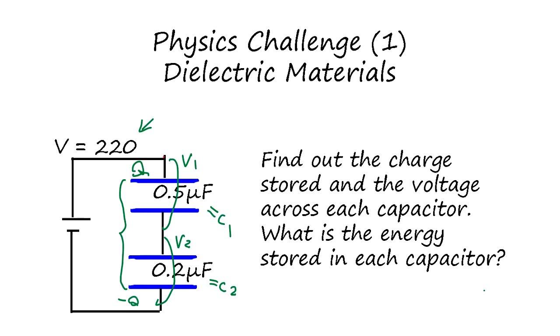So it's going to be Q over C1, that's voltage 1, plus Q over C2, that's voltage 2, is going to be total voltage. And if we consider this as a single capacitor, total voltage is going to be Q over C.